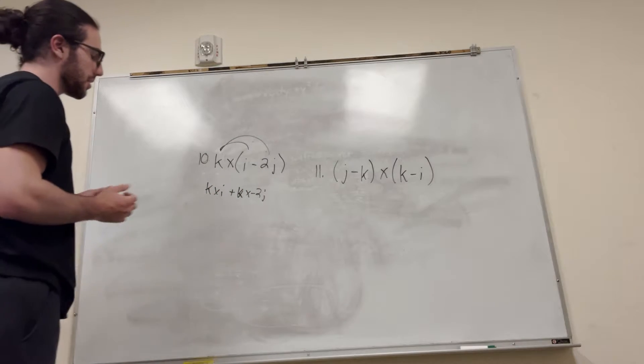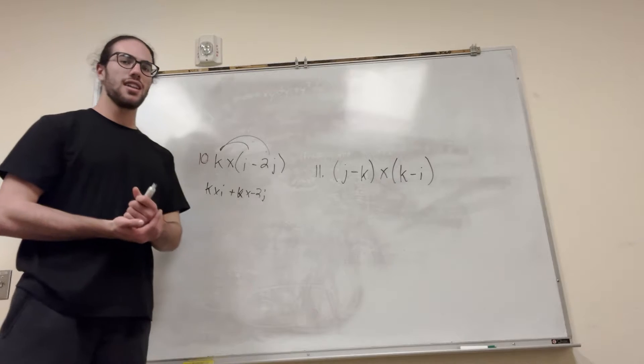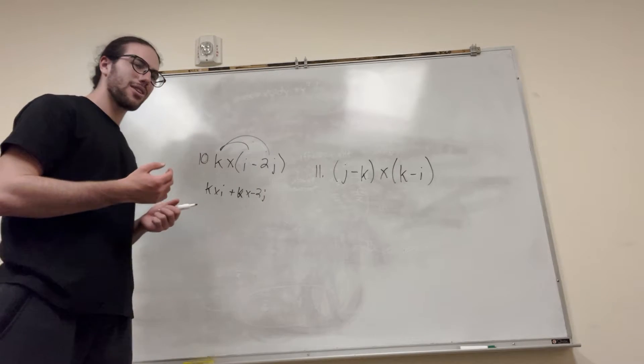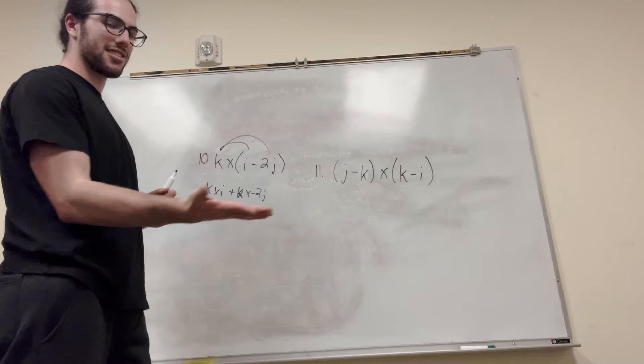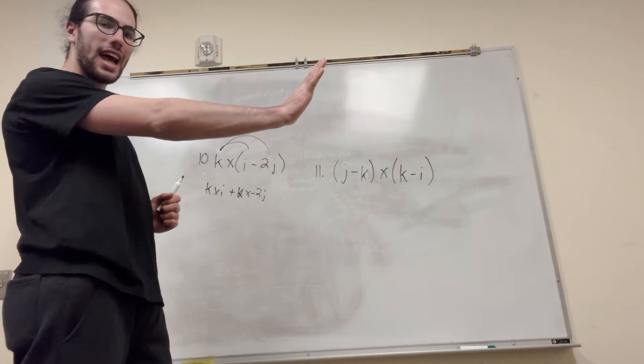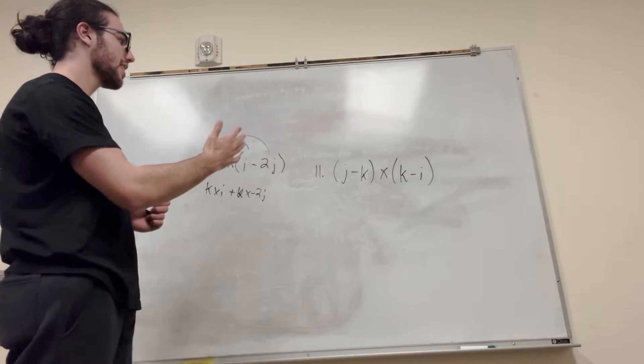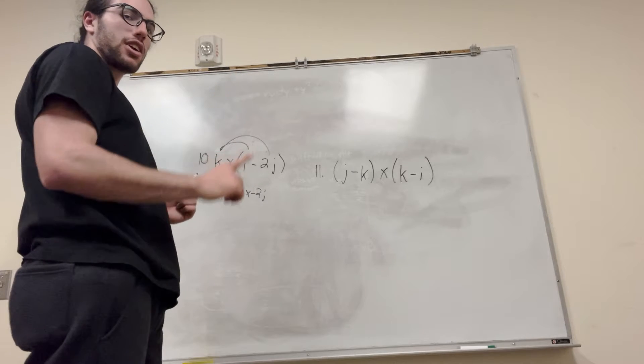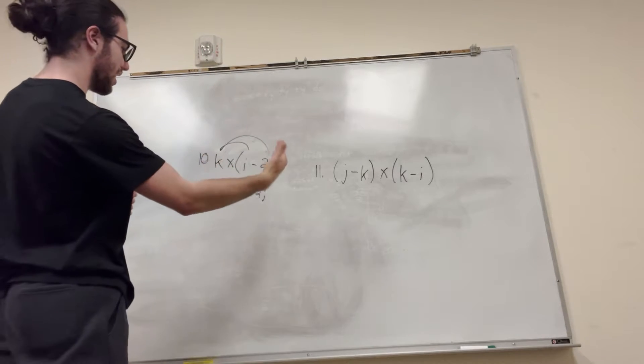Alright, so what do we do with k cross i? Well, you can do the right-hand rule. Let's think about it. So what you want to do with the right-hand rule is you point your fingers at the top one. So k, imagine k, i, j, k is pointing straight up. This is the z product, basically. So it's straight up.